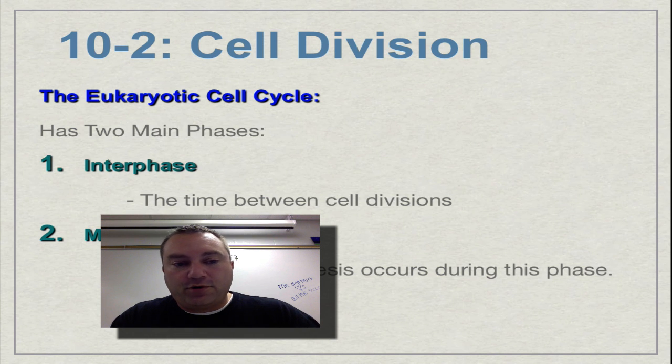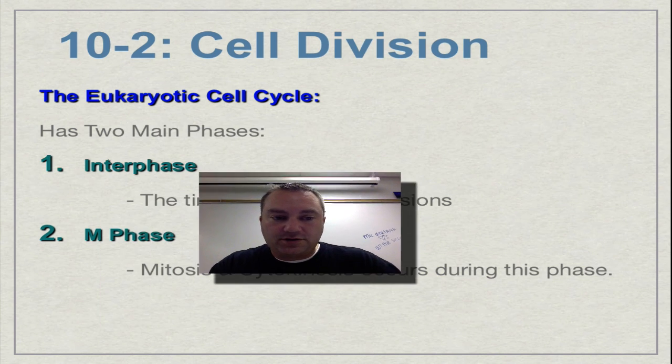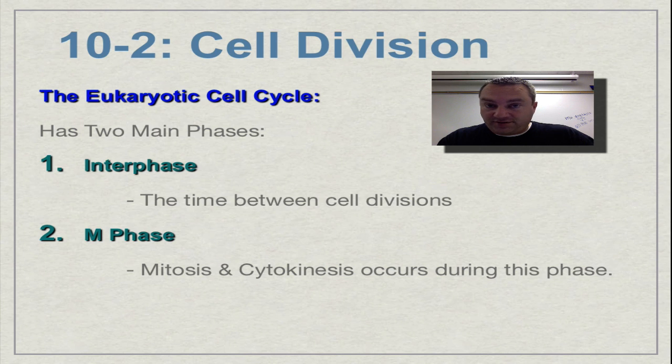Now the cell cycle can be broken into two main parts. The first part is called interphase. Interphase is the time where the cell is just doing its normal cell business. It's going to do replication, transcription, translation. If it's a plant cell, it's doing its photosynthesis. If it's a white blood cell, it's eating germs. It's just doing its normal everyday cell part.